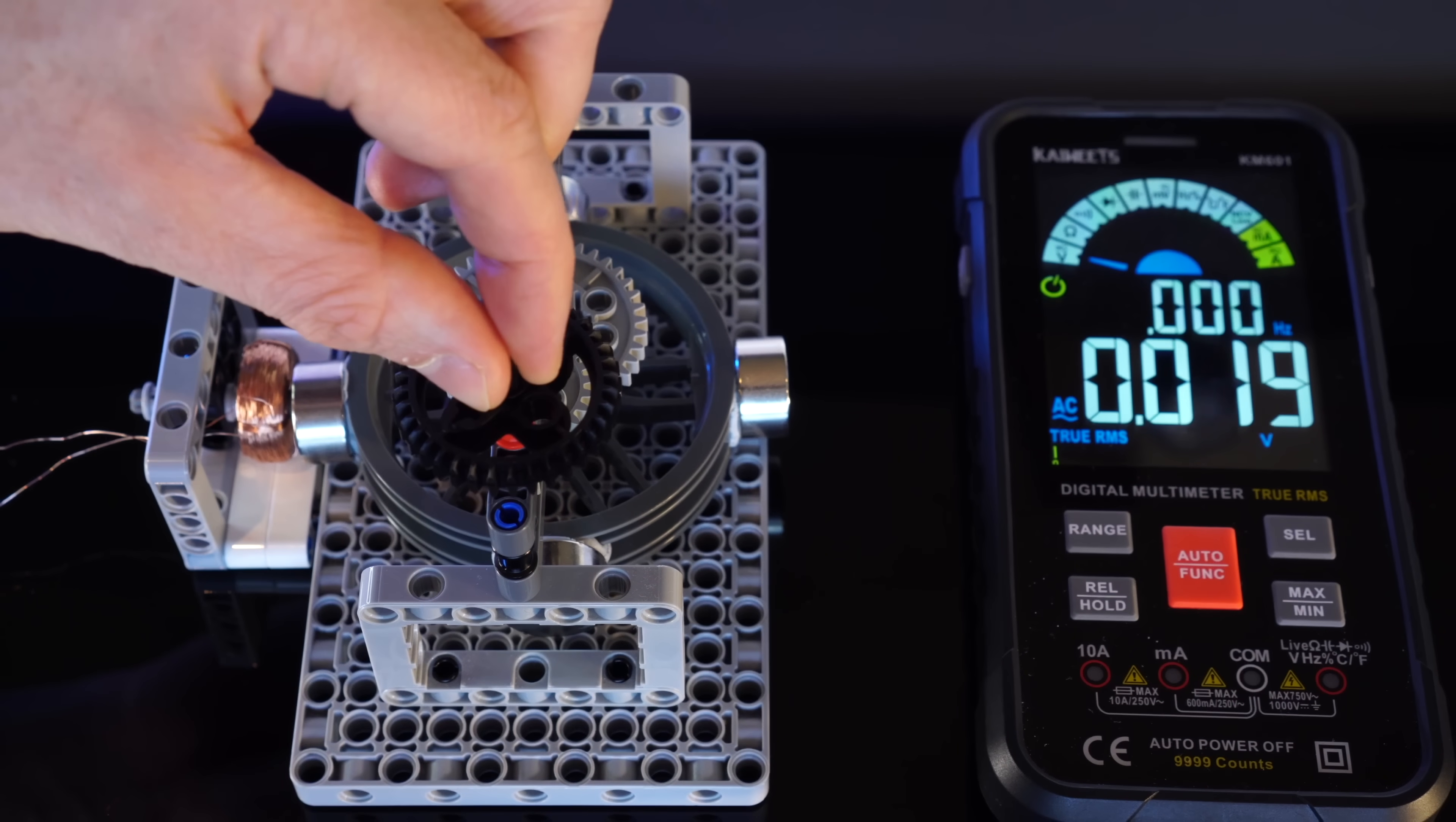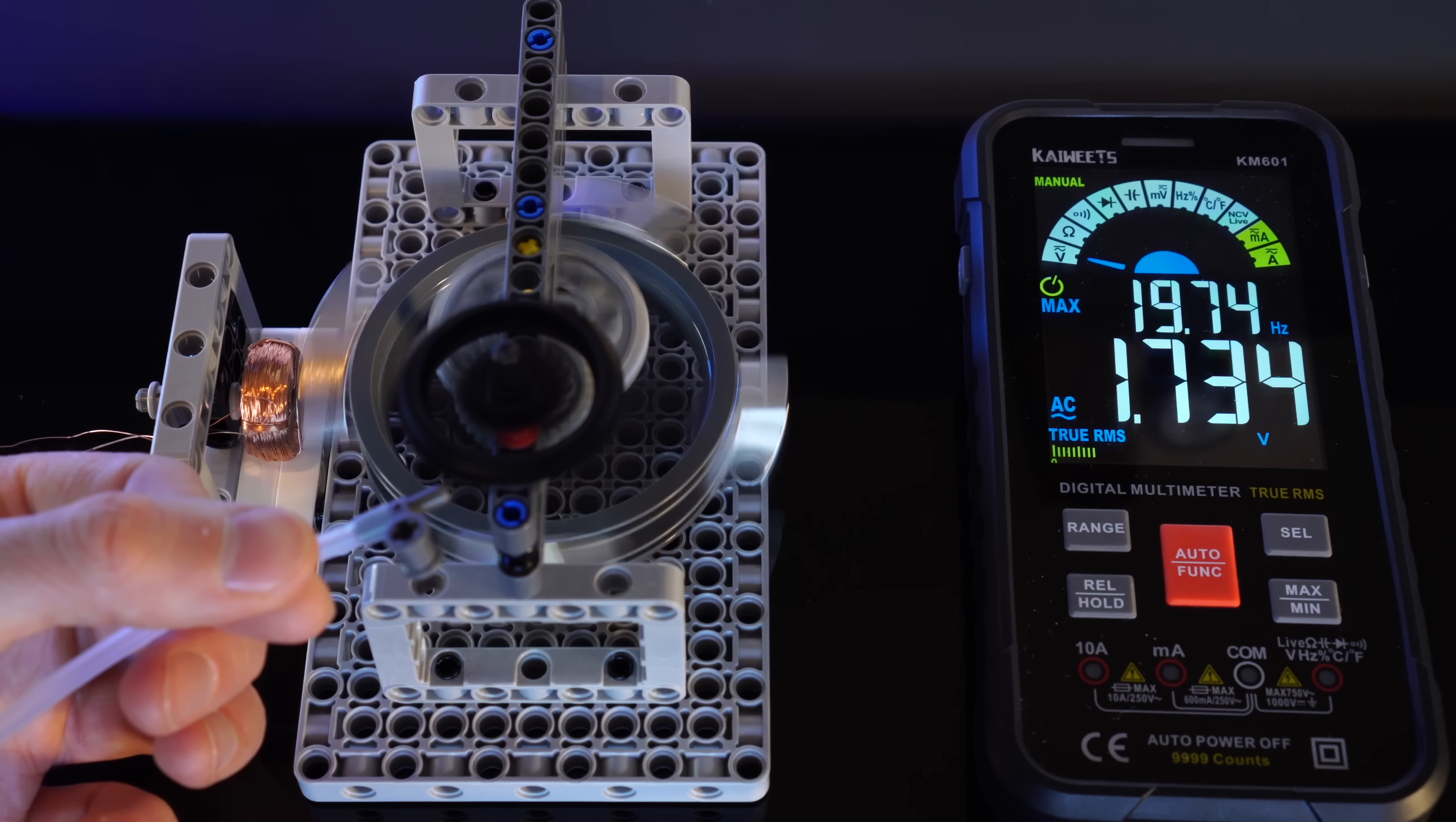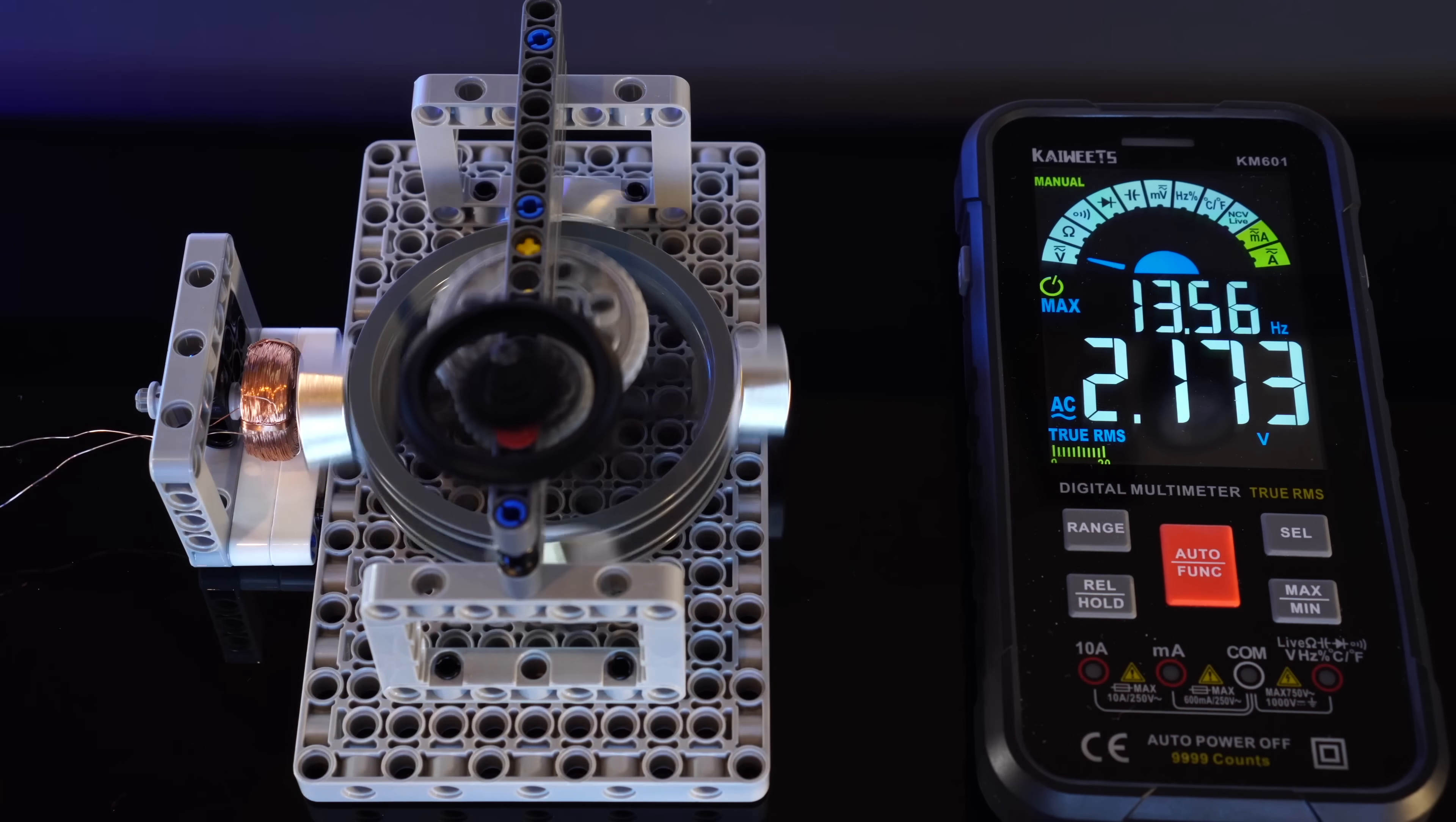Then we've got this, uh, I guess, 40-bladed turbine? It's just a gear. Now, this one screams, giving us a peak of 2.17 volts. Now, this one is promising, but it's obviously not capturing that much air.